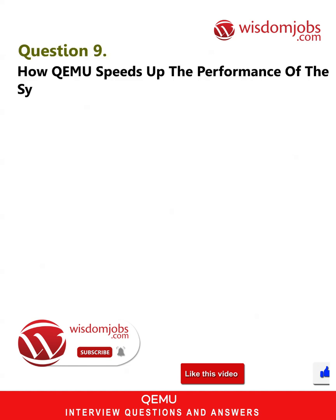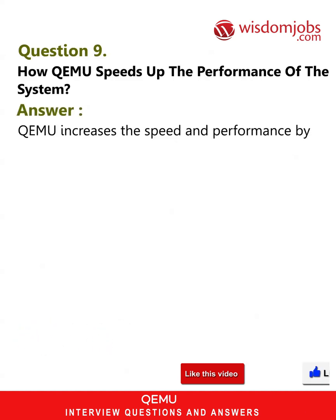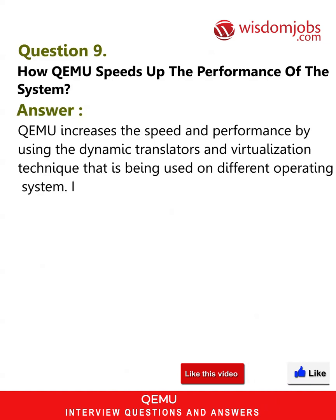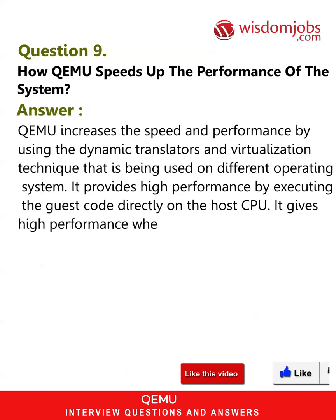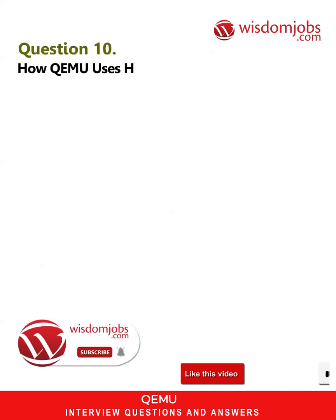Question 9: How does QEMU speed up the performance of the system? Answer: QEMU increases speed and performance by using dynamic translators and virtualization techniques that are used on different operating systems. It provides high performance by executing the guest code directly on the host CPU. It gives high performance when executing under the Xen hypervisor or KVM.